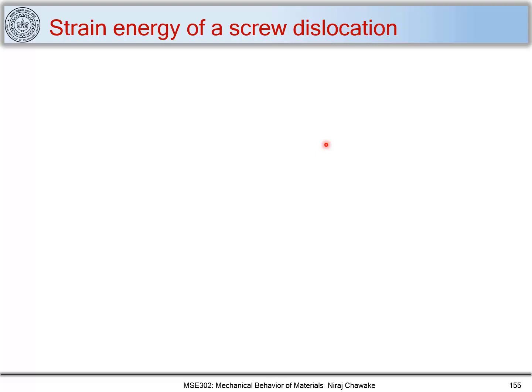We have seen what is a stress field for a dislocation — for a screw dislocation as well as for an edge dislocation. As you know, for a dislocation there is an elastic distortion around it, so that distortion must be associated with some energy, or we can call it elastic strain energy. In this part, we are trying to find out or quantify this elastic strain energy around a dislocation.